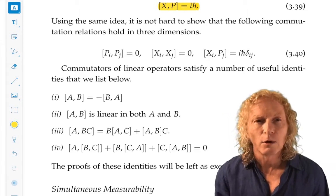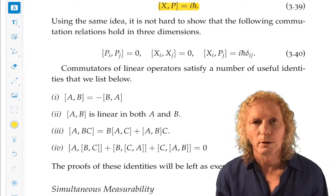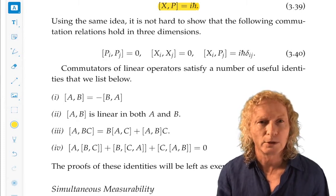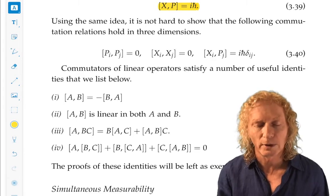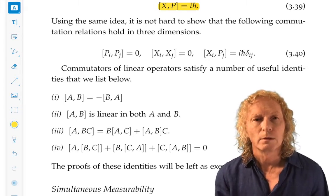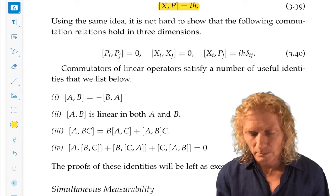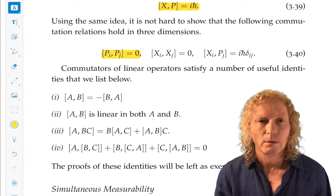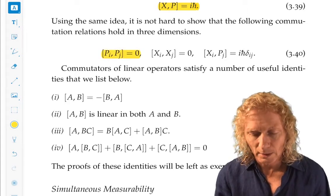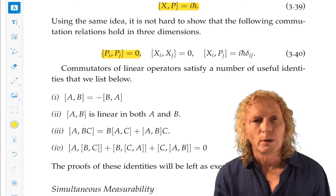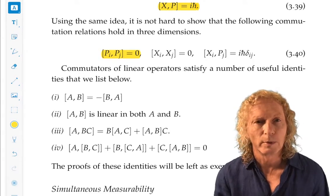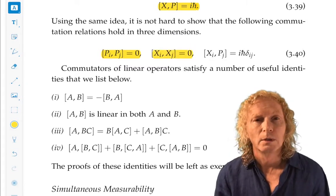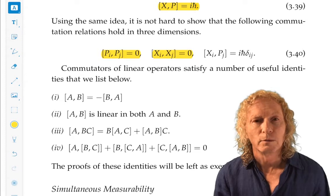The same idea holds if we go to three dimensions. Because remember, we had the momentum operator and position operators in three dimensions. They were just the obvious generalizations where we generalized component by component. This tells me that the different components of momentum, three-dimensional momentum, commute with each other.